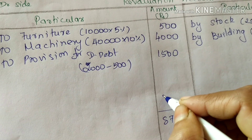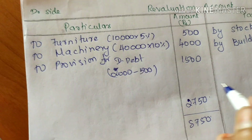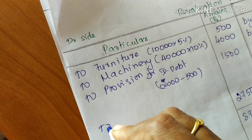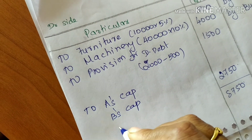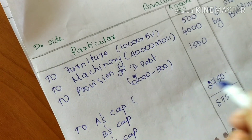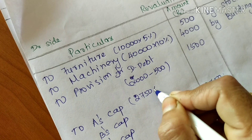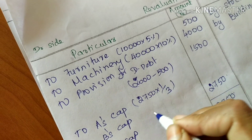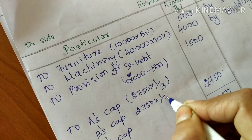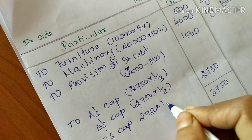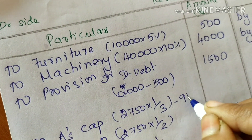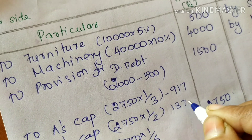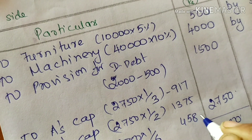The revaluation profit of 2,750 is distributed among existing partners A, B, and C in their old ratio: 2,750 into 1/3, 2,750 into 1/2, and 2,750 into 1/6 — giving A: 917, B: 1,375, and C: 458.